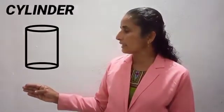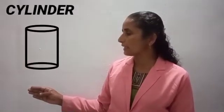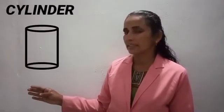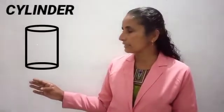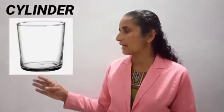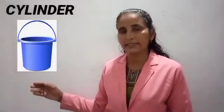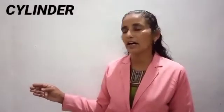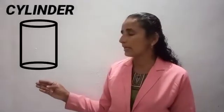This is a cylinder. C-Y-L-I-N-D-E-R, cylinder. For example, we can see a glass, a drum, and a bucket — all of these look like a cylinder. The last solid shape is very familiar to you.